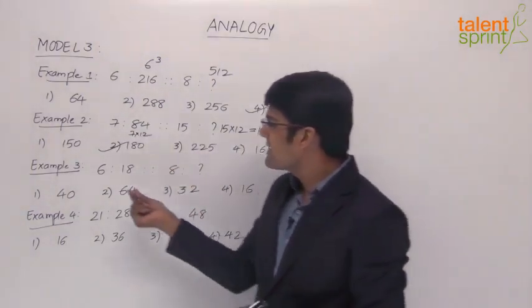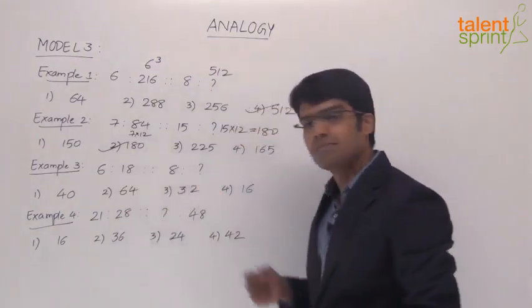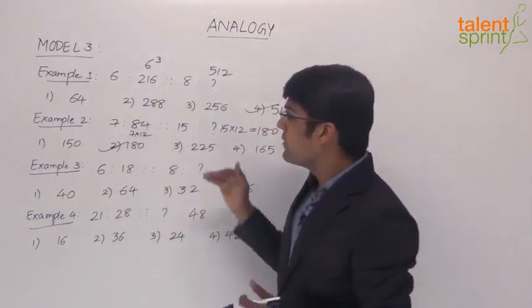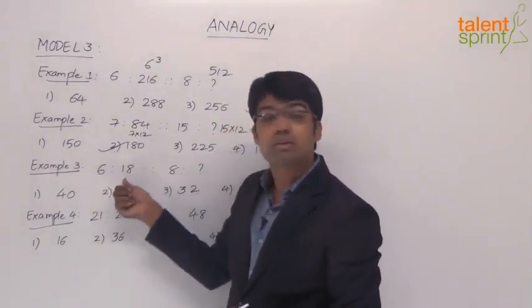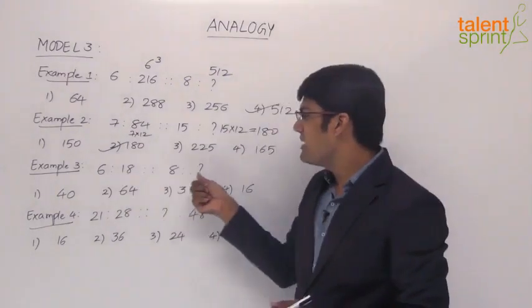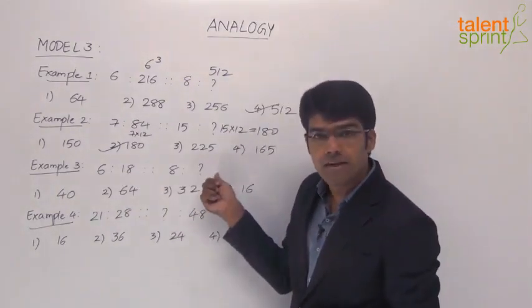Third example says 6 is to 18, then 8 is to what? Now immediately when you look at the question, the very first idea that we get is 6 and 6 into 3. 6 into 3 is 18. So 8 should be 8 into 3. 8 into 3 is how much? 24.